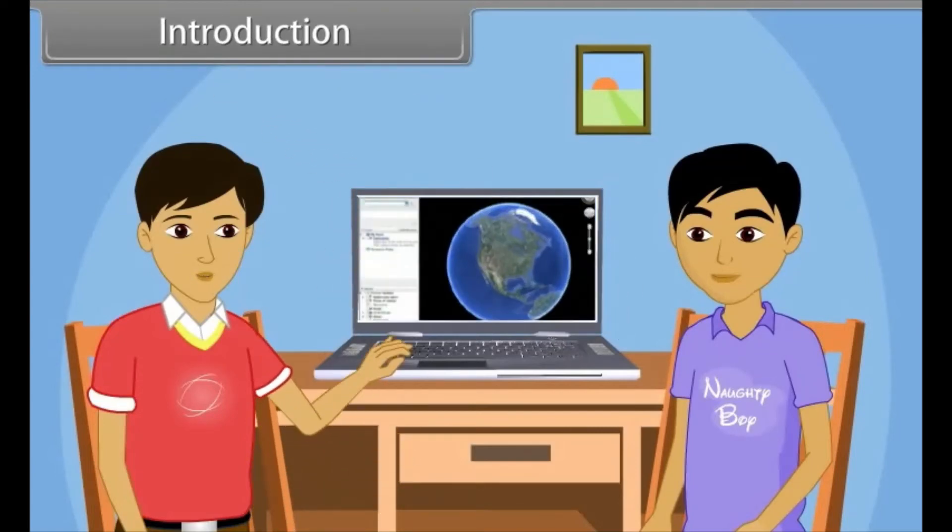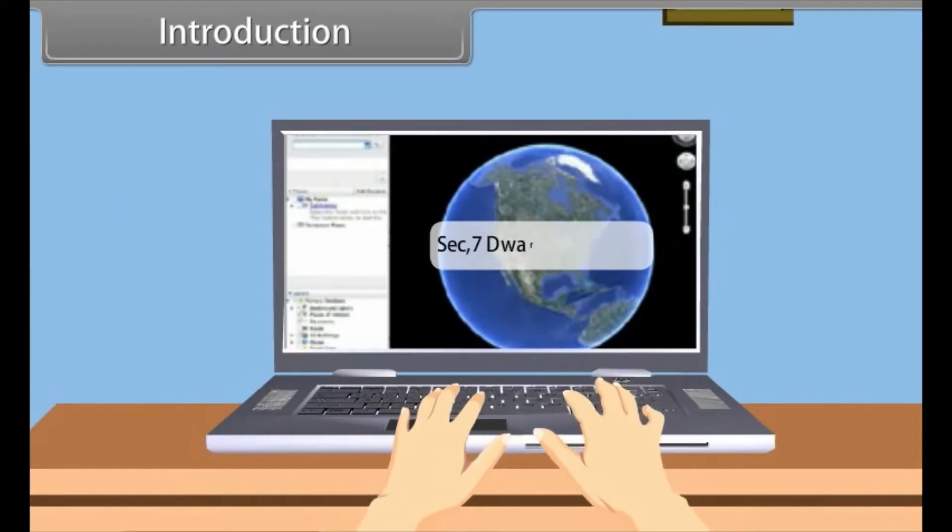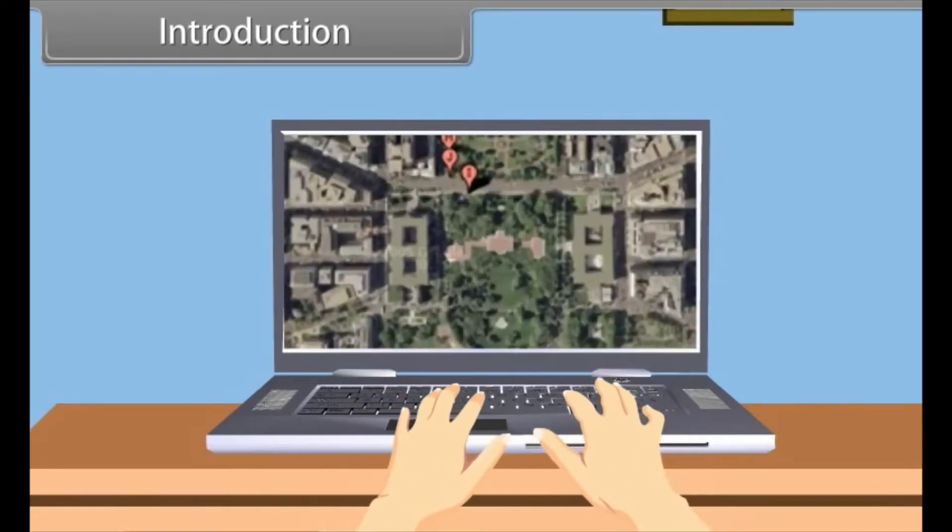Raj, today I will show you my house on my laptop screen. Really? I'd like to see. I am giving the address of my house. Now I am just zooming the map till my house is visible. See, my home is visible now.